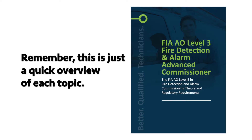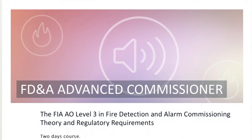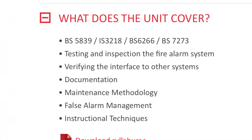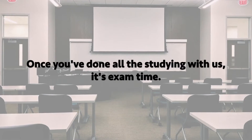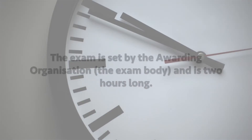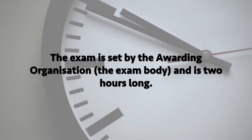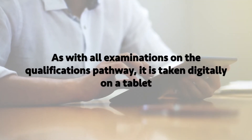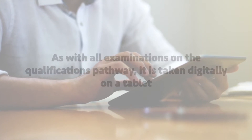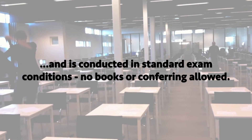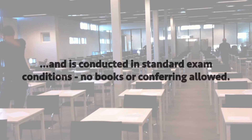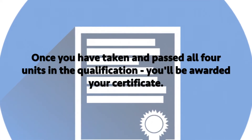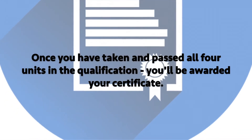Remember, this is just a quick overview of each topic. We strongly recommend that you download the full syllabus to find out more about the course content. Once you've done all the studying with us, it's exam time. The exam is set by the awarding organisation and is two hours long. As with all examinations on the qualification pathway, it is taken digitally on a tablet and conducted in standard exam conditions — no books or conferring allowed. Once you've taken and passed all four units in the qualification, you'll be awarded your certificate.